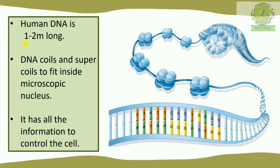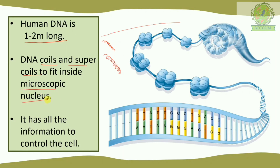In humans, DNA is generally one to two meters long, and there are many DNA molecules present inside the nucleus. So how does this long DNA fit inside such a microscopic nucleus? It coils and super-coils. When it coils, it condenses and packages itself — the length stays the same but it occupies much less space. Just like telephone wires, which are long but coil themselves up.